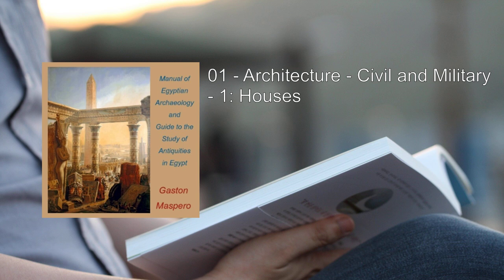The roof was flat, and made probably, as at the present day, of closely laid rows of palm branches covered with a coating of mud, thick enough to withstand the effects of rain. Sometimes it was surmounted by only one or two of the usual Egyptian ventilators, but generally there was a small wash-house on the roof, and a little chamber for the slaves or guards to sleep in. The household fire was made in a hollow of the earthen floor, usually to one side of the room, and the smoke escaped through a hole in the ceiling. Branches of trees, charcoal, and dried cakes of ass or cow dung were used for fuel.